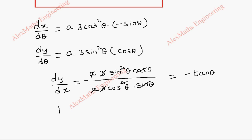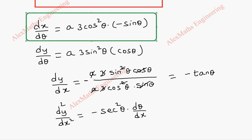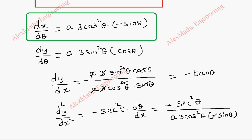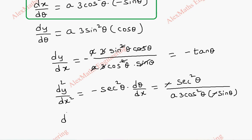From this we can find the second differentiation, d²y/dx². This is −sec²θ, and we differentiate with respect to x, so we need dθ/dx. The reciprocal of dx/dθ is substituted for dθ/dx here. So this becomes −sec²θ into 1 divided by A·3cos²θ·(−sinθ). We can cancel the minus signs. Finally, d²y/dx² becomes 1 divided by 3A·sinθ·cos⁴θ.